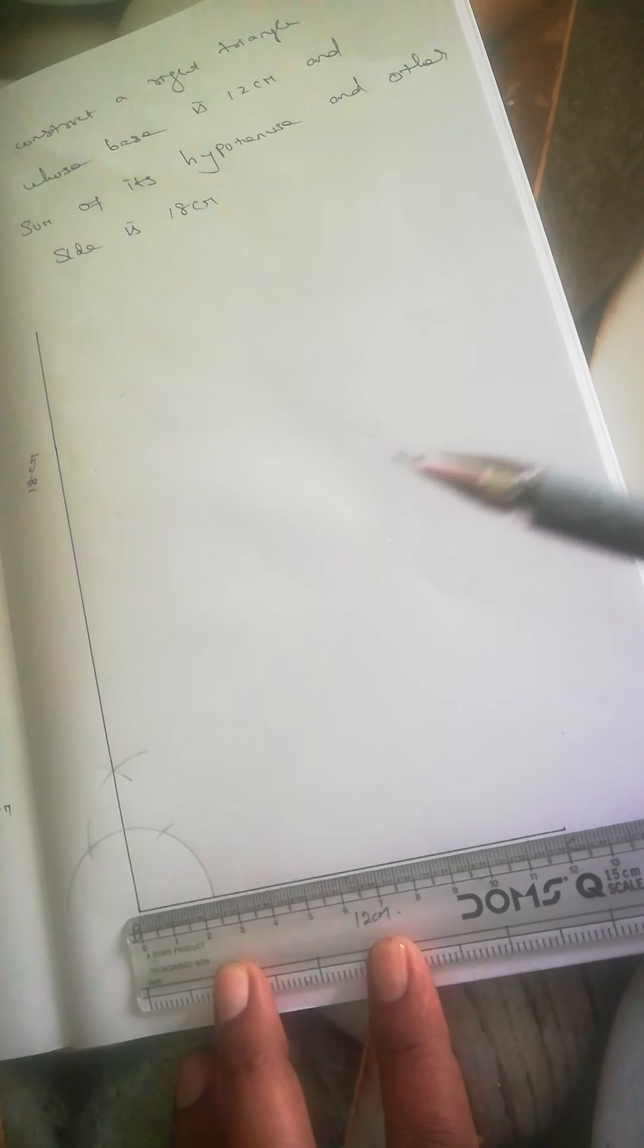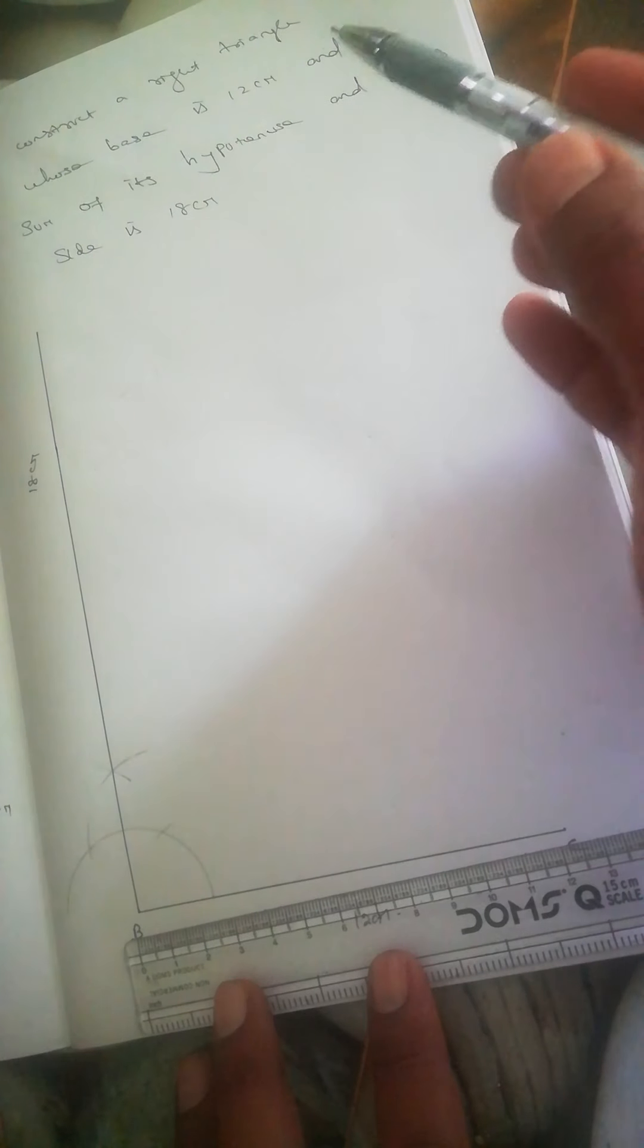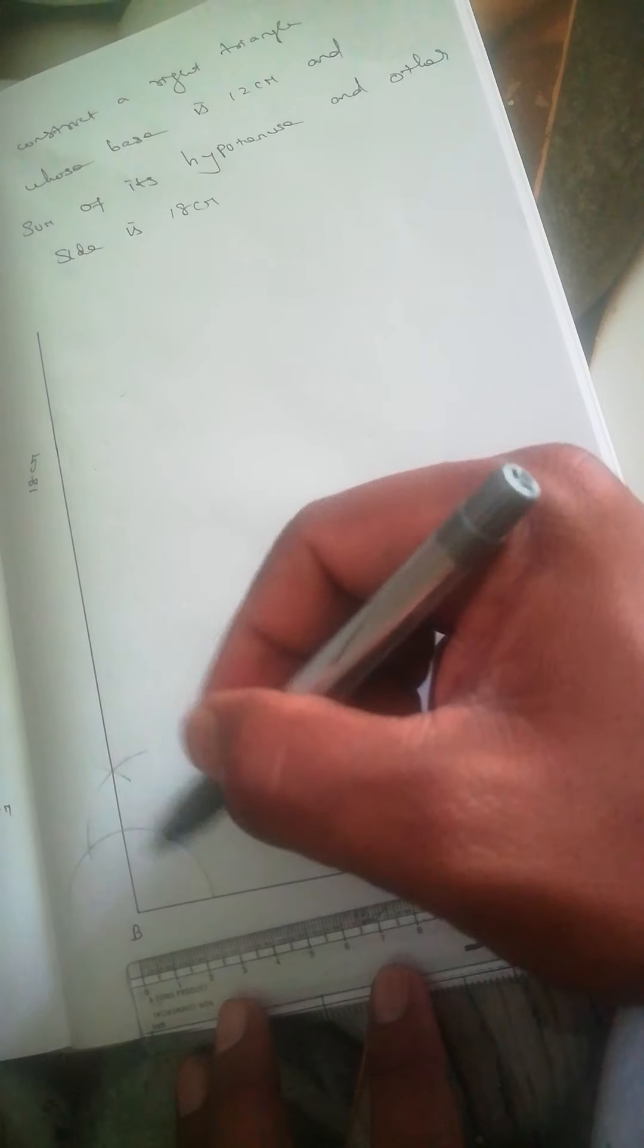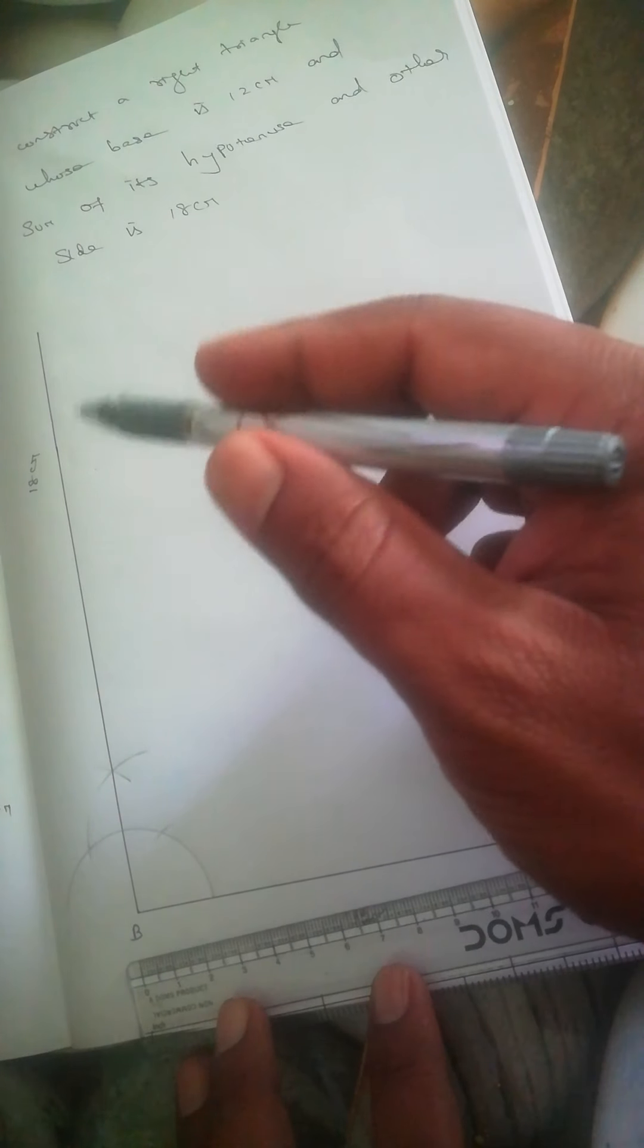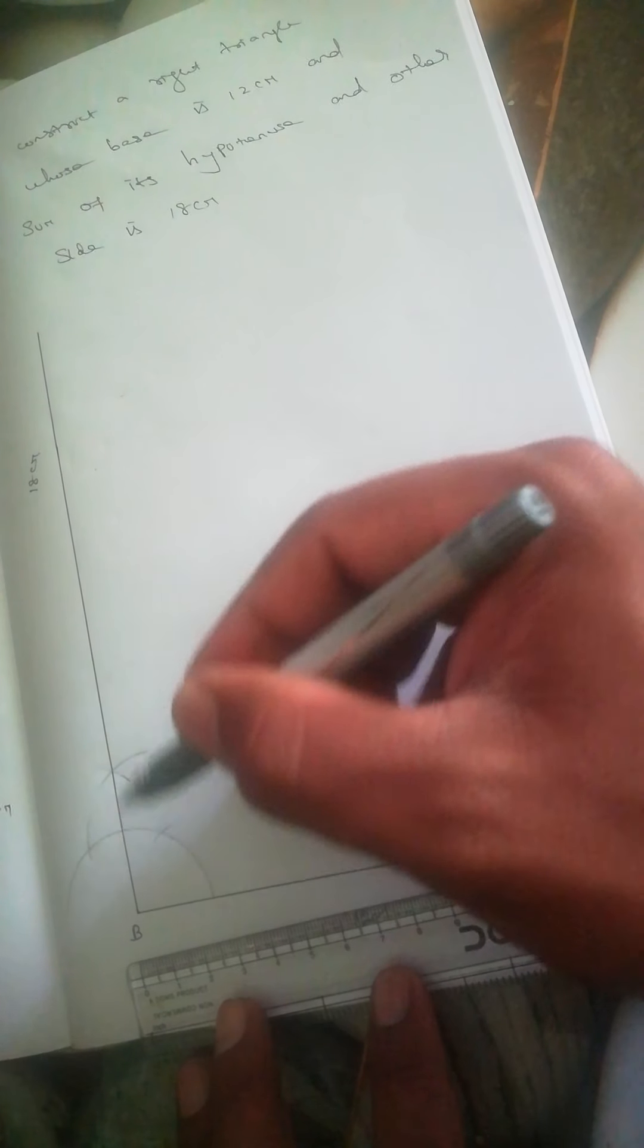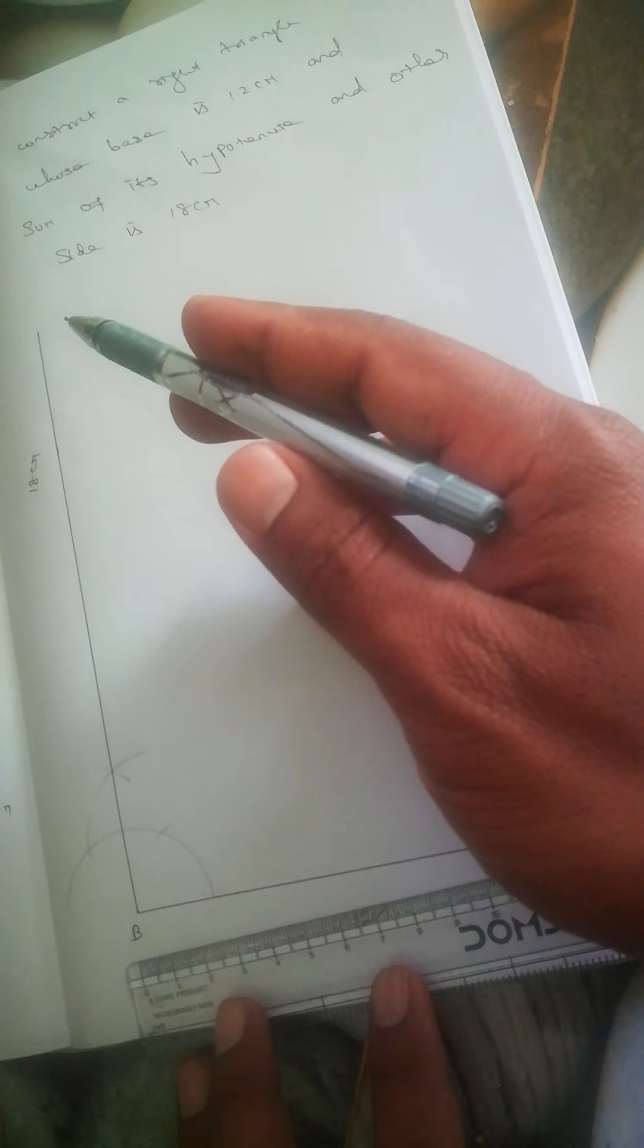The sum of the hypotenuse and other side is given as 18 centimeters. Since this is a right triangle, construct a 90-degree angle at point B. From B, draw a line 18 centimeters long.